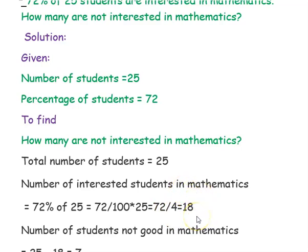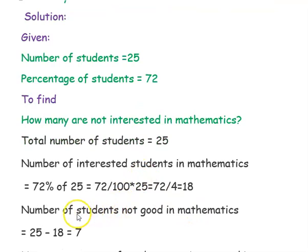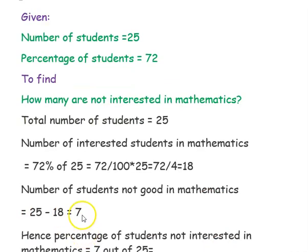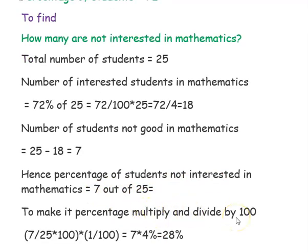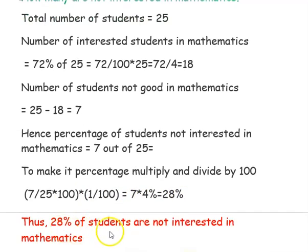Now, 72 into 25 divided by 100 is nothing but 72 divided by 4, that is 18. So the number of students who are interested in mathematics is 18. Total number of students is 25, students interested is 18, so students not interested is 25 minus 18, that is 7. The percentage of students not interested is 7 out of 25, i.e., 7 divided by 25 into 100 into 1 by 100. That gives 7 into 4, which is 28 percentage. Thus 28 percentage of students, that is 7 students, are not interested in mathematics.